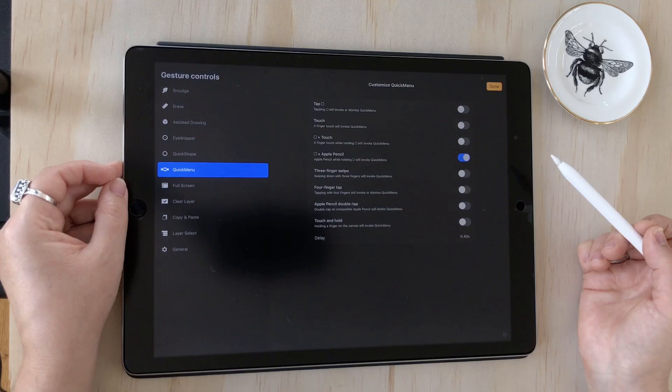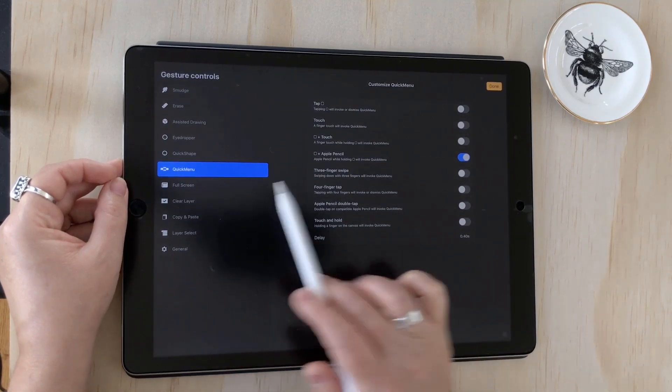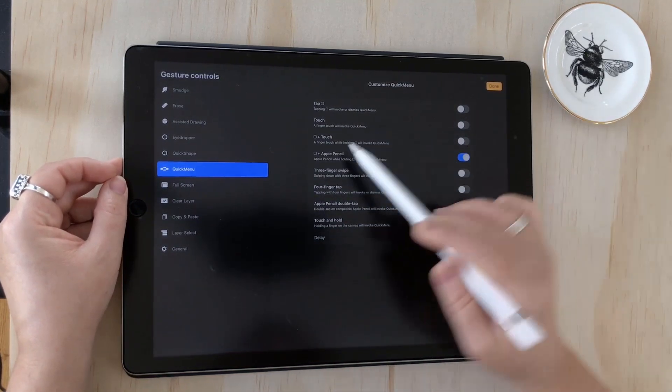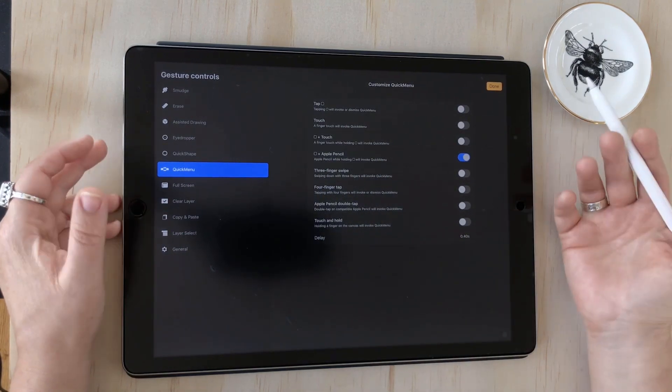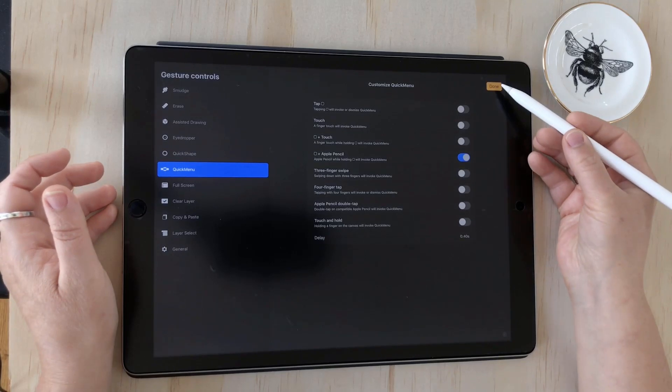Then there's Quick Menu on the left and you can see I've got that activated by the little square and the Apple pencil, so that works the best for me. You choose what works best for you.